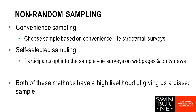A self-selected sample is one where participants opt into the sample themselves. Common examples include online polls on news websites or TV news shows where viewers text a number, visit a website, or use a Twitter hashtag to give their view. Self-selected sampling tends to create a bias because the people most likely to respond are those with strong views on the topic. When we can, we want to avoid non-random sampling, but sometimes limited time or budget means we have to use it.